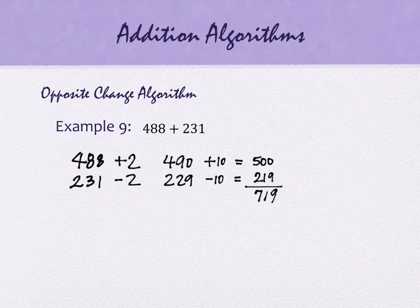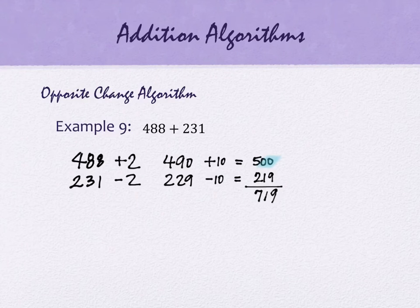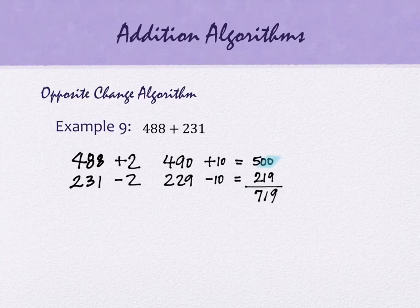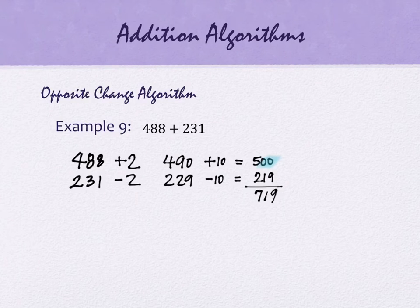The goal is to get one of the numbers to have zeros everywhere — lots of zeros. You could continue the process: if you had 900 instead of 500, you might think 1,000 would be easier, so add 100 to it and subtract 100 from the other. You can apply this in the hundreds place and continue as needed.